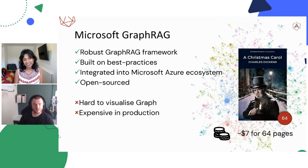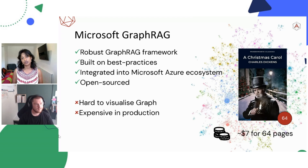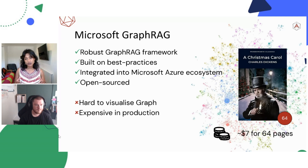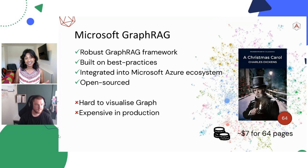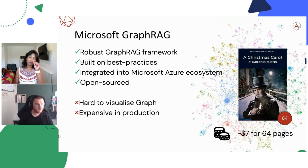We're seeing $7 for 64 pages. Within Microsoft's blog, they recommended The Christmas Carol by Charles Dickens — it's 64 pages — as a tutorial to build a graph network and do question and answers. That cost comes in at $7 for 64 pages. If you're taking that into production with more than 64 pages, that cost can soon escalate. You'd really need to look at return on investment — fraud detection is probably the most useful use case. If you can save X amount from catching fraud, it's a good value proposition. But proof of concepts are probably expensive to run.